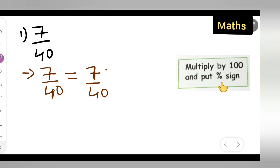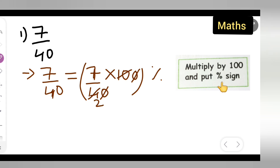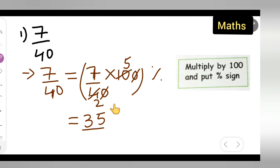So 7 upon 40, we need to multiply it with 100 and then put a percentage sign. We can cancel the zeros — 2 and 2's are 4, 2 fives are 10. So 7 fives are 35, giving us 35 upon 2. So I can write down 35 upon 2 percent.